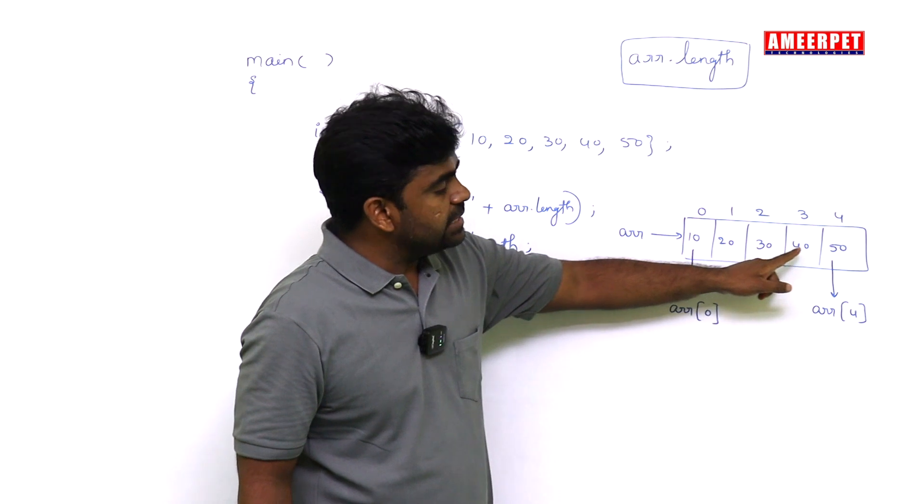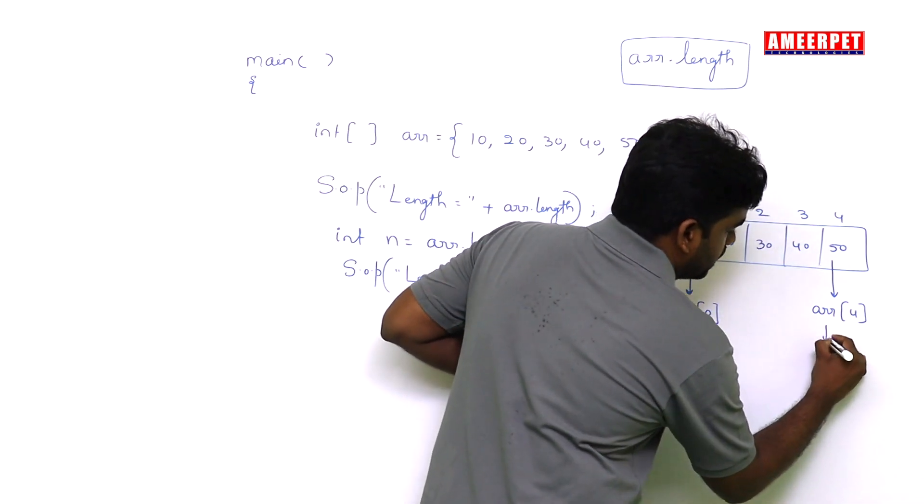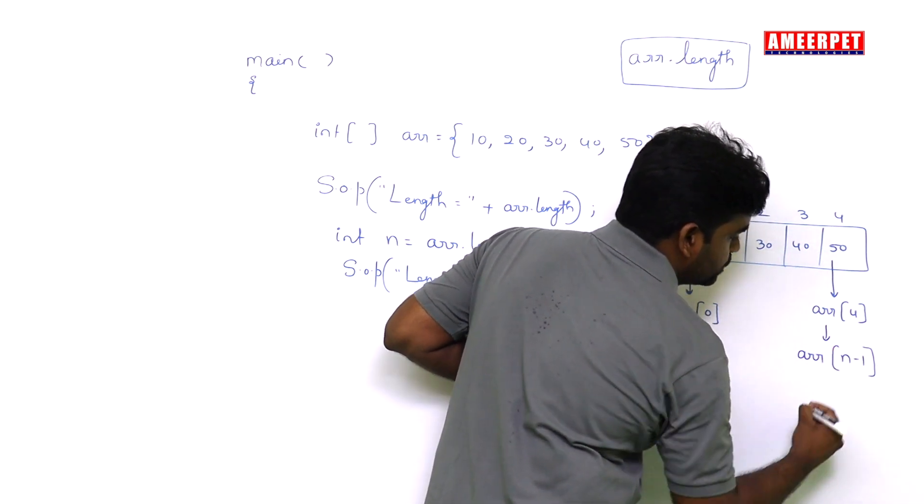It is very simple. Suppose 5 elements are there, length is 5. Here arr of 4 means 5 minus 1, which is n minus 1.